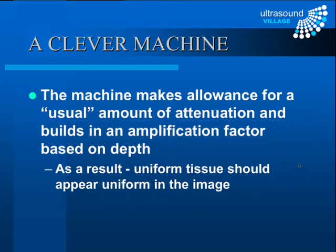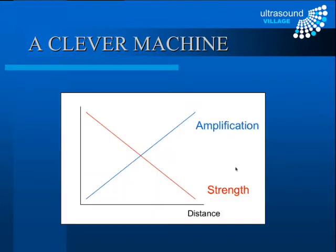The machines themselves are very clever. We've already spoken about attenuation — the tissue absorbs and dissipates energy. The machine actually accounts for this by building in an amplification factor based on depth, which it knows from the return signal time. The result is that a uniform tissue should appear uniform in the image. A blip returning quickly receives only a small amplification, while a blip that takes much longer to return is amplified a great deal more to compensate for that attenuation.